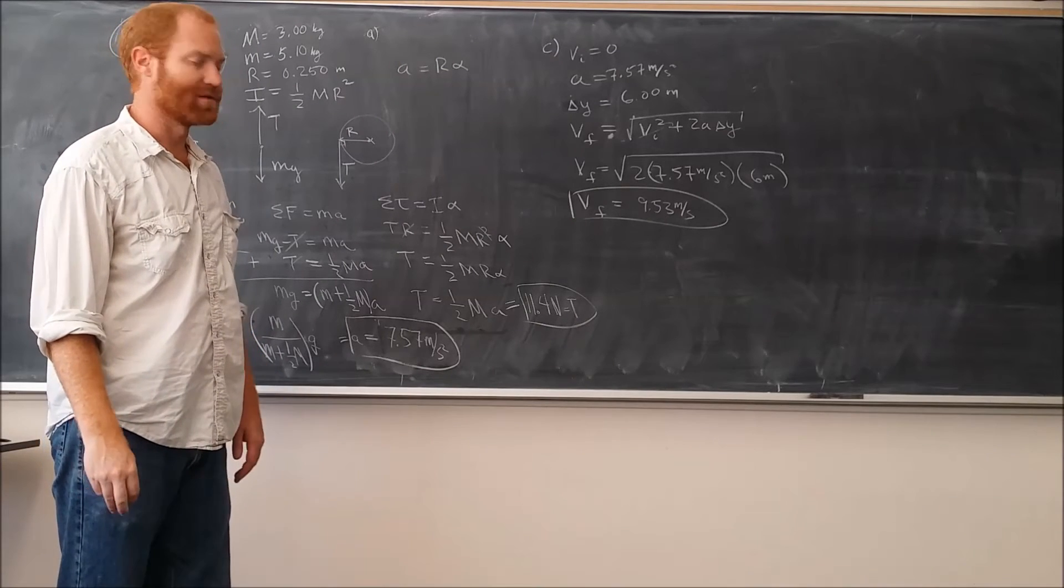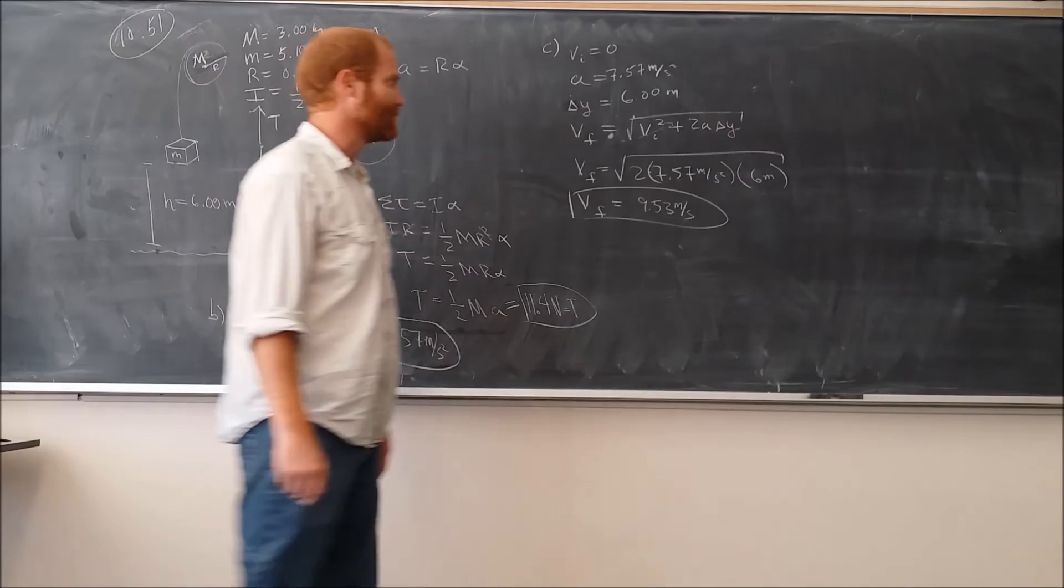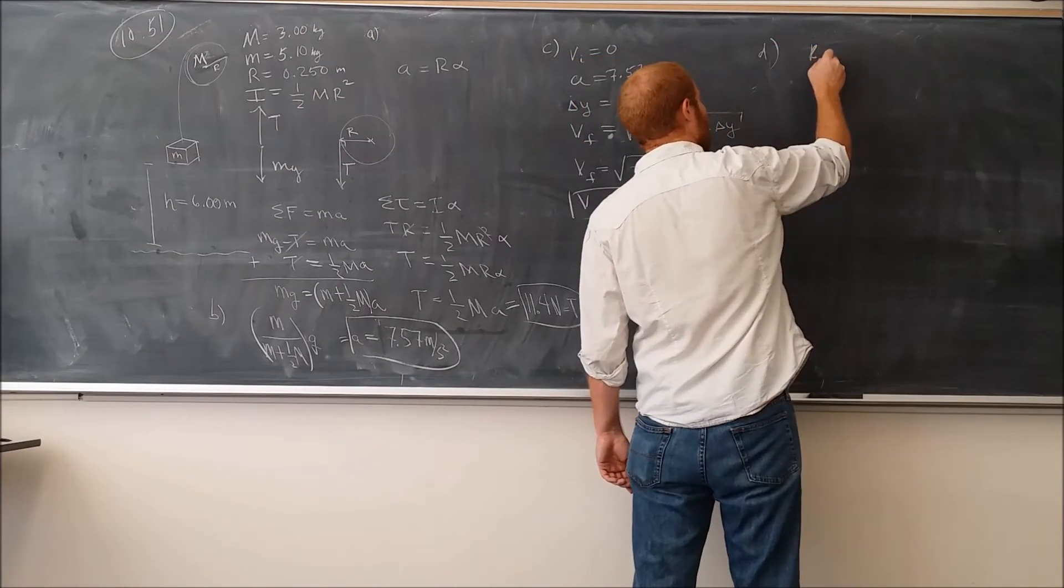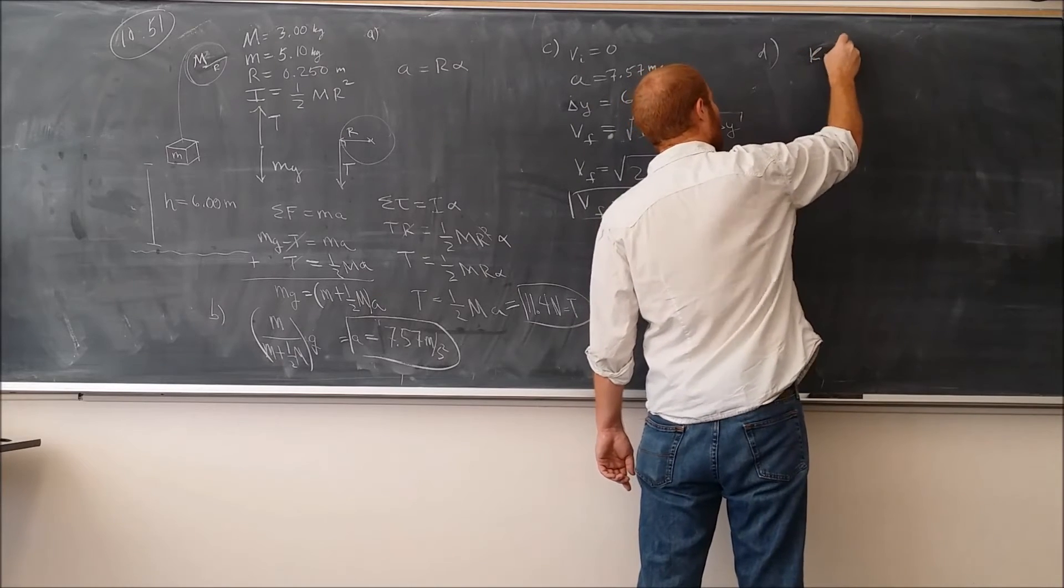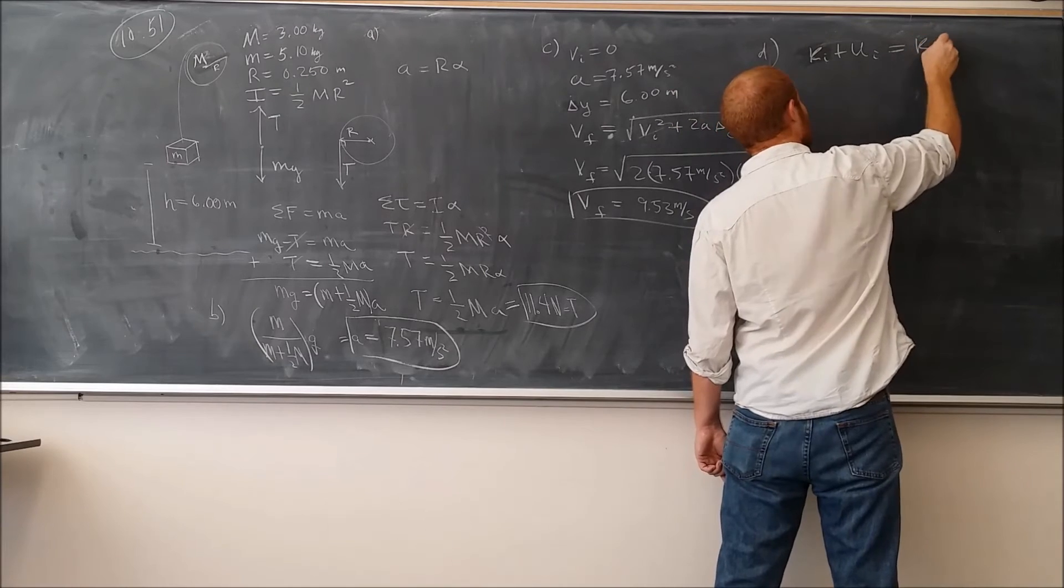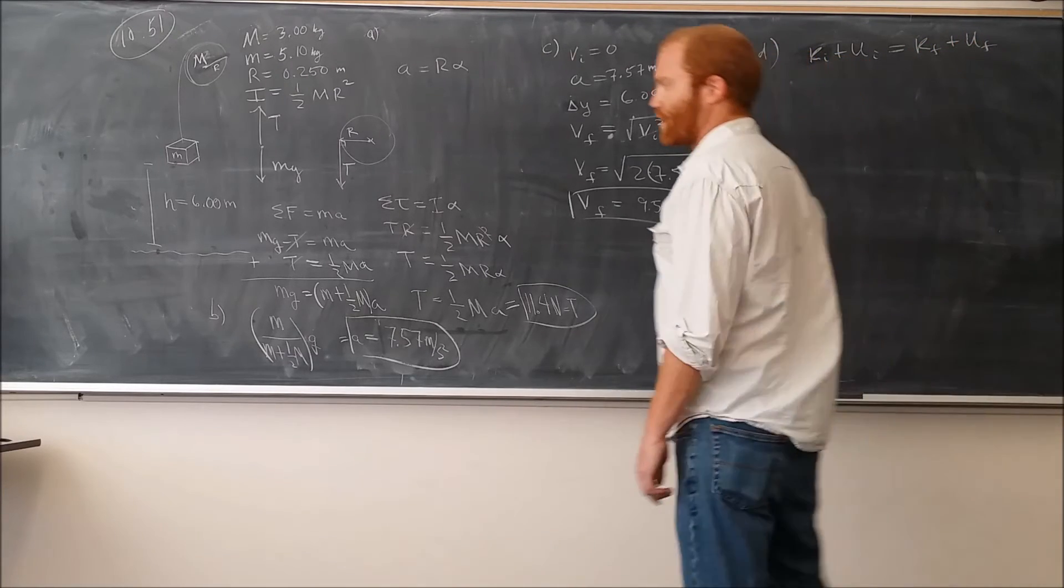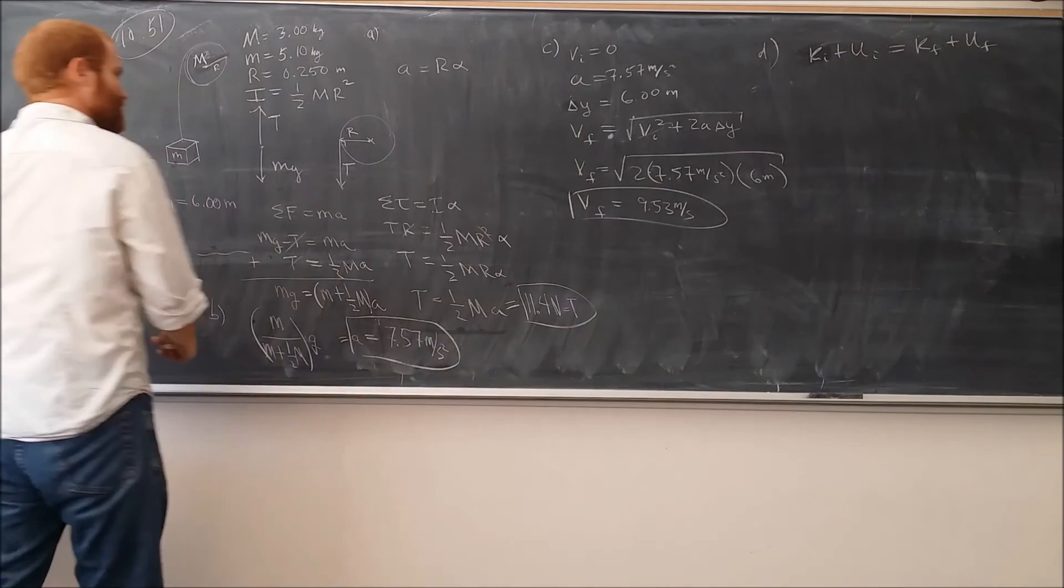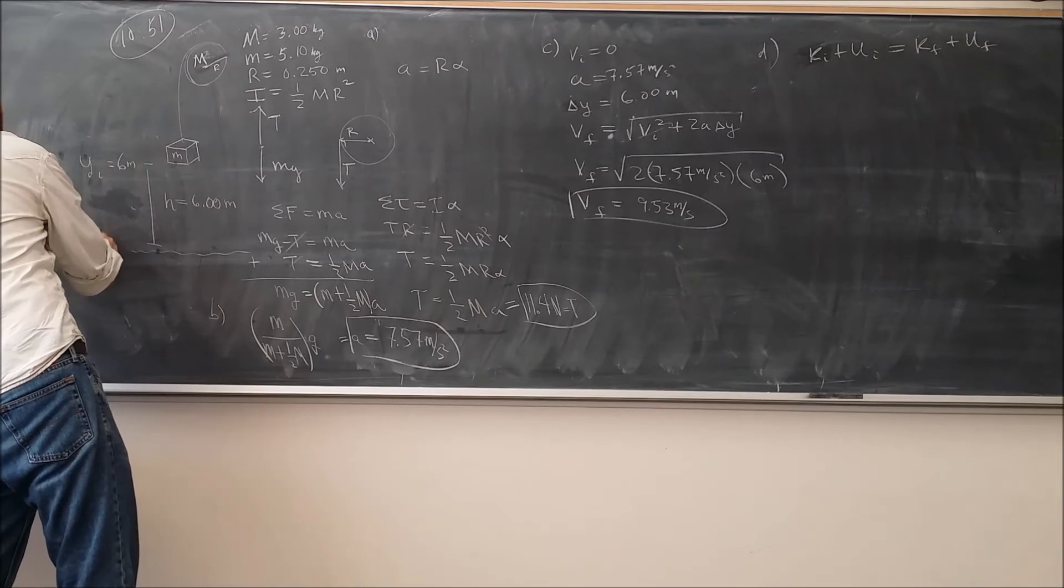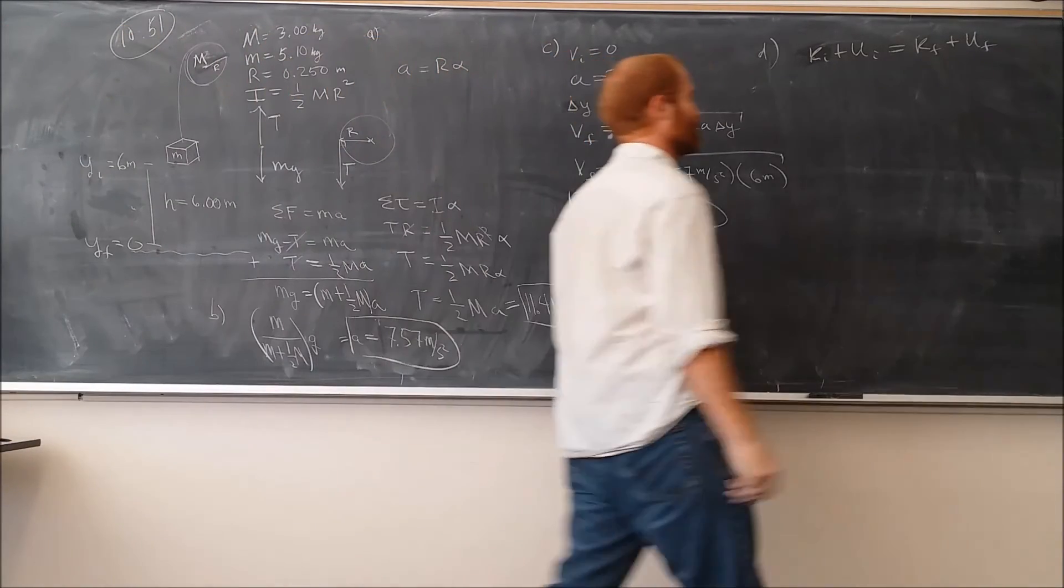The next step is to solve this using energy and verify that we get the same thing. So in order to do that, we're going to say that the initial kinetic energy plus the initial potential energy equals the final kinetic energy. So the initial point that it starts at here, we're going to say that the initial height is equal to 6. We're going to call this down here the final height equal to zero, which means that our final potential energy is going to be zero.